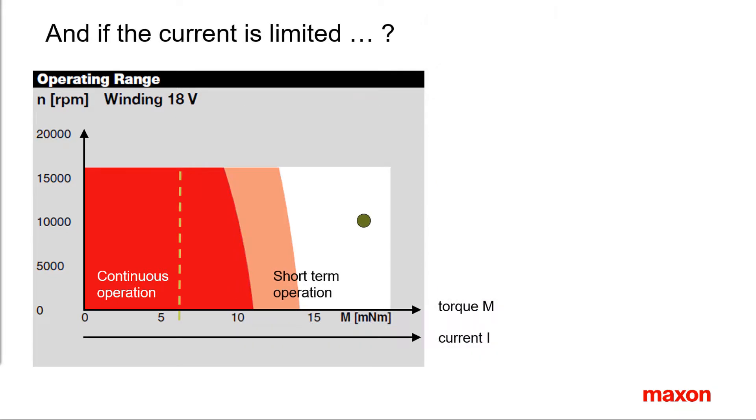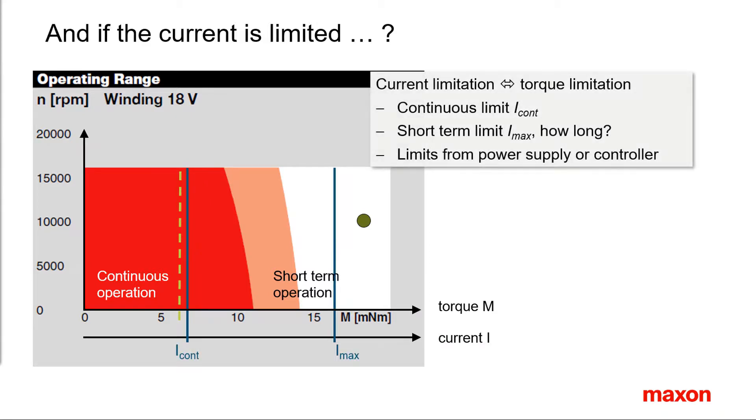Power supply and/or controller typically impose continuous and maximum current limitations. Since current equals torque, this results in torque limitations. As a consequence, the continuous and short-term operating ranges might be restricted. Load operation points that could easily be handled by the motor might not be achievable anymore due to the lack of sufficient current.